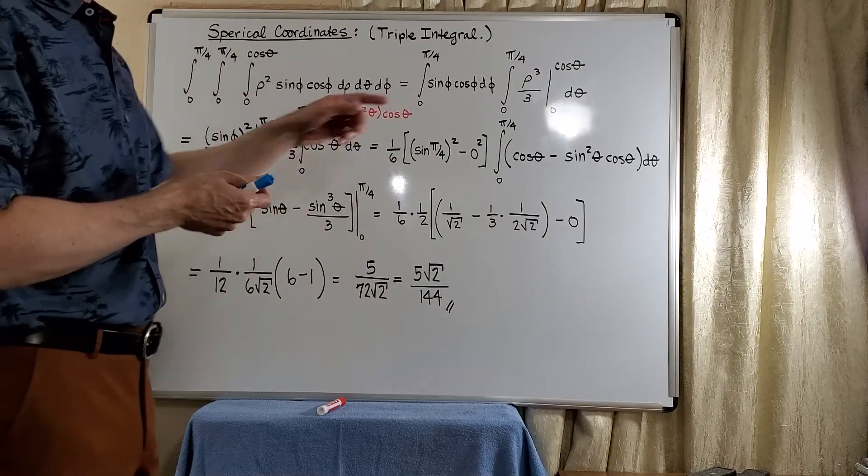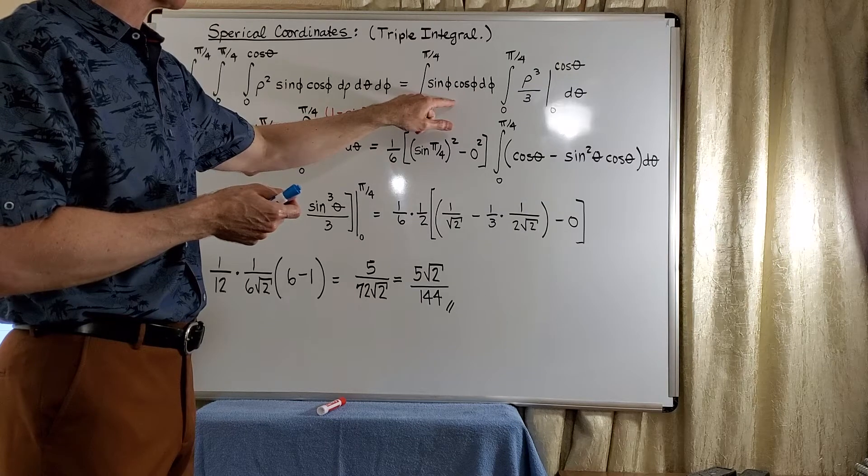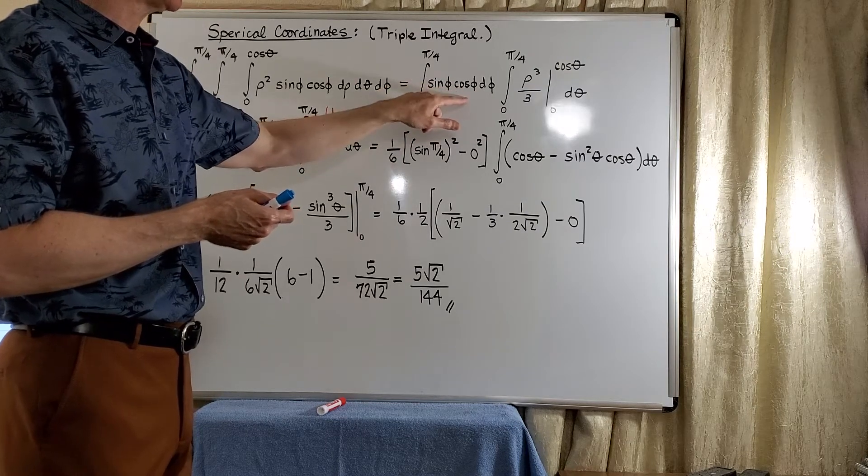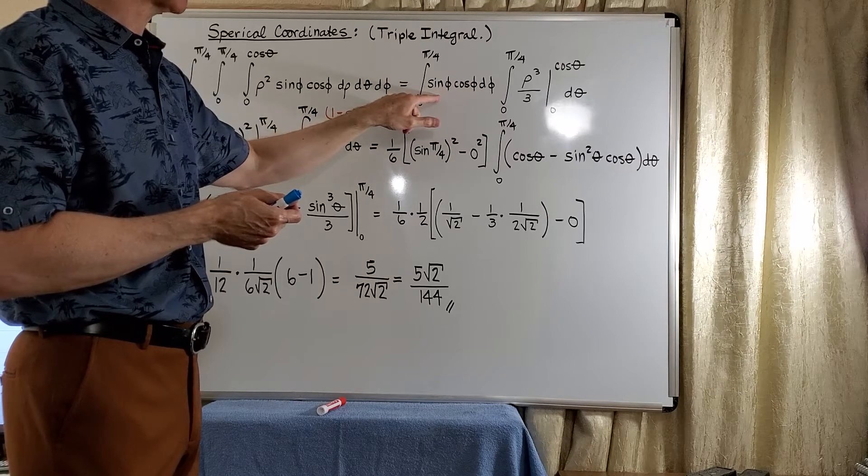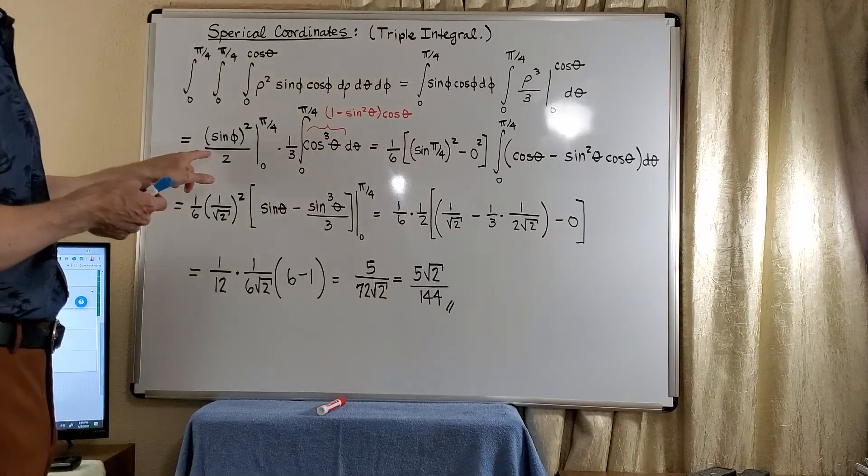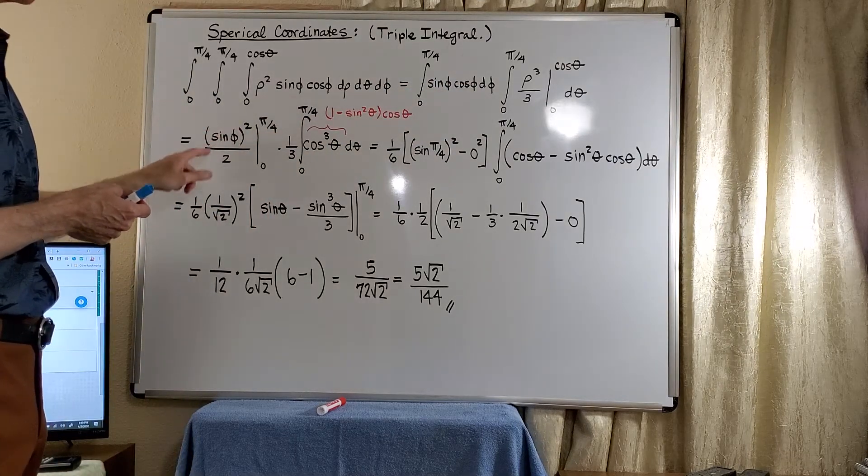So at this point, we can go ahead and look at this integral and see that this is u du. This is ready to go. Here's u. Here's the differential. So this is add 1 divided by the new power. So we get sine phi quantity squared divided by 2.